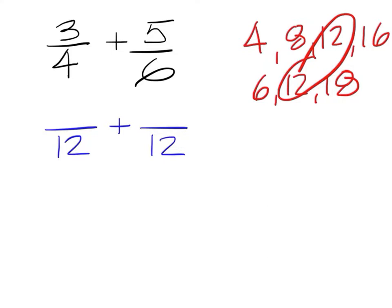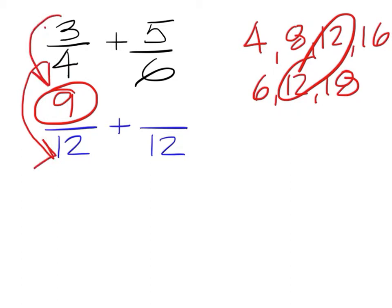What number goes in this spot? Davis — 9 is right. How do we come up with a nine in that spot? Rayburn — that's right. If we multiply 4 by 3 to get 12, then we have to multiply 3 by 3 to get the 9.